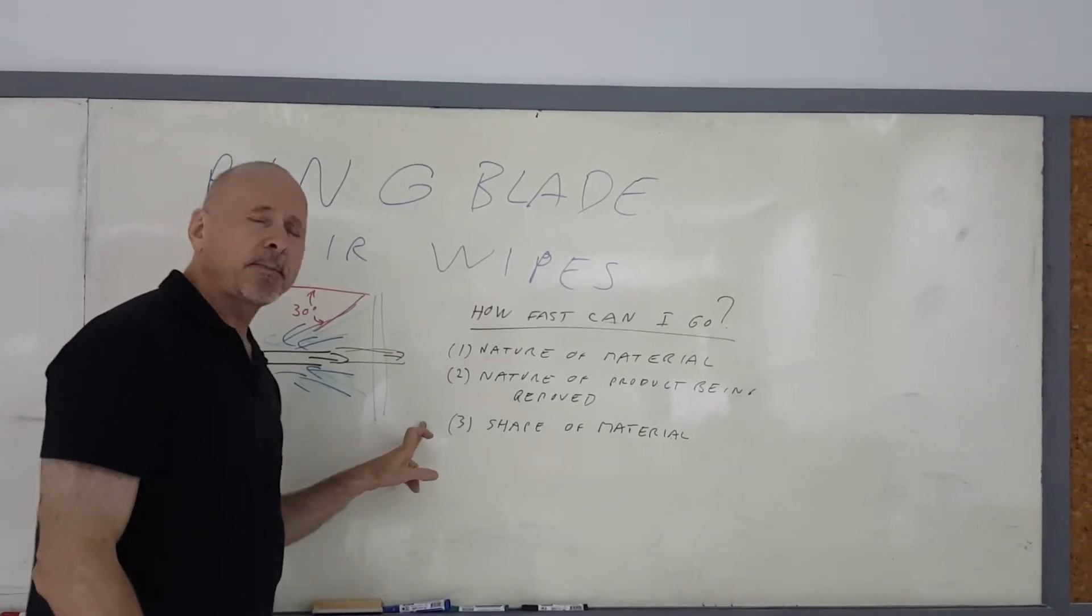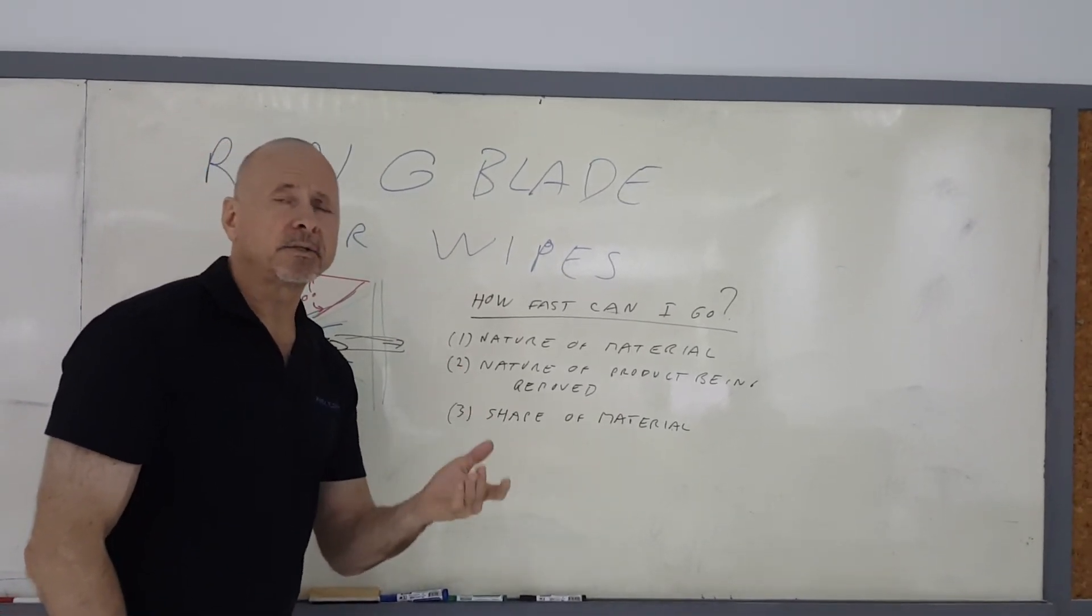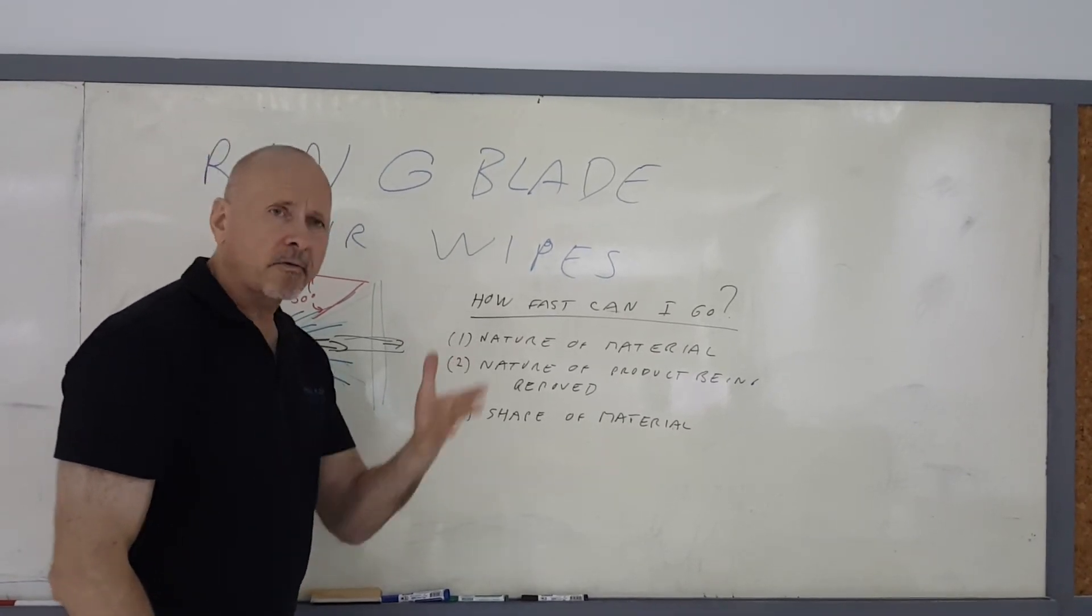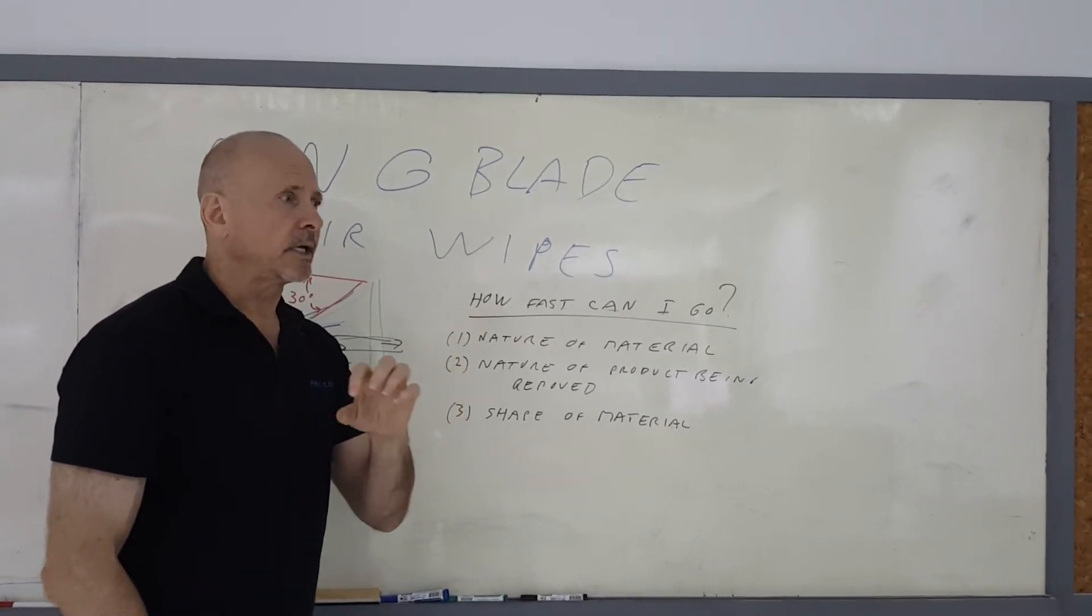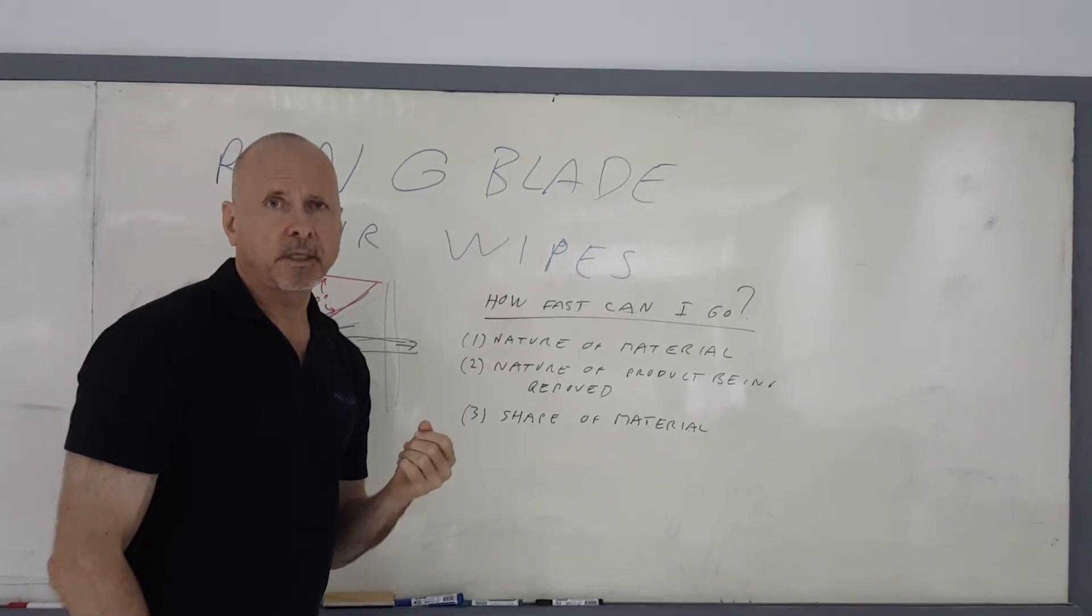And finally, the shape of the material. If it's smooth, it's going to be a lot easier to dry. If it's rough, or if it's bumpy, like say corrugated hose, it's going to be a little bit tougher to clean.